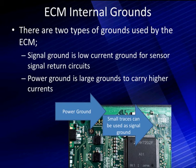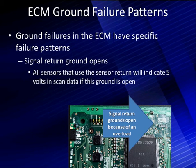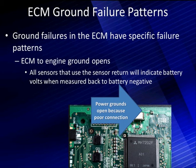Be careful what you hook into signal grounds — they're not high current grounds. We can have an open signal return, and when they open, we need to talk about the failure pattern. This is important: we have a specific failure pattern for an open signal return. All sensors that use the sensor return will indicate 5 volts in scan data if this ground is open — it removes the reference and we don't have anything to read. Power grounds usually open because of poor connections, and they'll indicate battery voltage when measured back to battery negative.